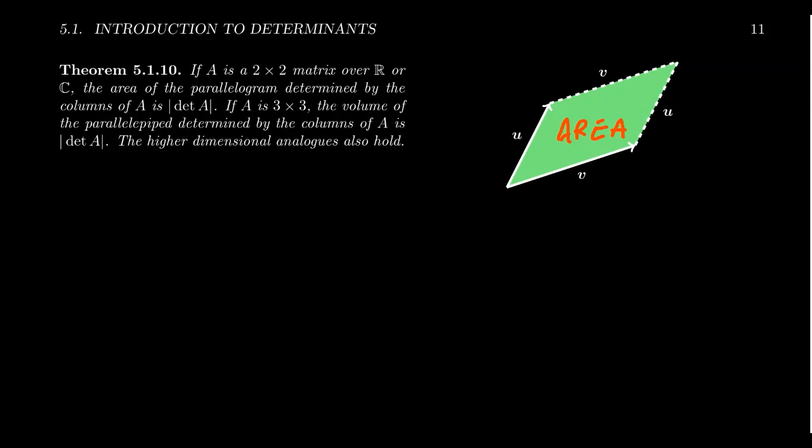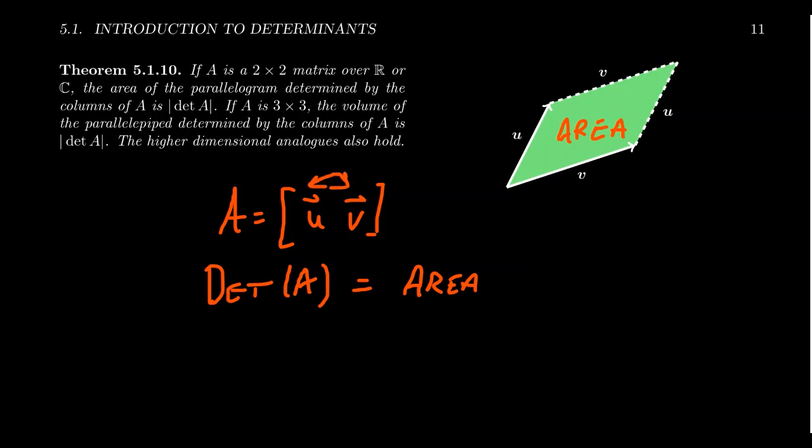It turns out that if we form the matrix A so that its first column is u and its second column is v, then the determinant of this matrix A will equal the area of the parallelogram. Now, unfortunately, though, it does depend on who comes first, u or v. There is an orientation issue.